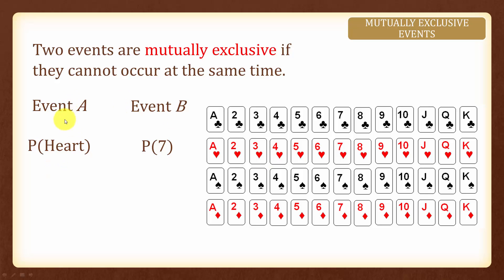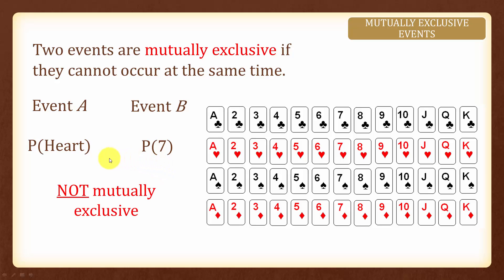Now what happens if event A is getting a heart and event B is getting a 7? Then these 2 events are not mutually exclusive because we have a card that is both a 7 and hearts, and these 2 events can occur at the same time.